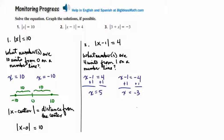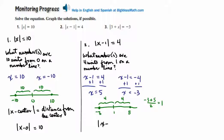Let's graph it to verify. We plot negative 3 and 5. To find the center, we add the two values: negative 3 plus 5 equals 2, divided by 2 equals 1. So the center is 1. The distance from negative 3 to 1 is 4, and the distance from 1 to 5 is 4. These are the two numbers that are 4 units away from 1 on the number line, confirming our structure: absolute value of x minus the center equals the distance from the center.